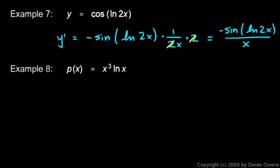P prime is found by taking the derivative of x cubed, which is 3x squared times the natural log of x, plus x cubed times the derivative of the natural log, which is 1 over x.